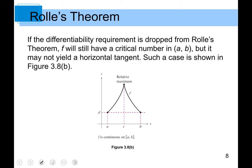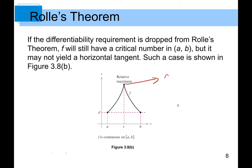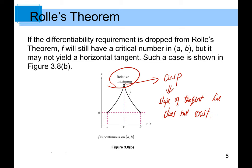If we remove the differentiability requirement from Rolle's Theorem, then f will still have a critical number in the open interval (a, b), but it may not yield a horizontal tangent. This is the case when we have a cusp. A cusp is a typical case where the slope of the tangent line does not exist at that point, yet we still have a relative maximum — even though it's not a horizontal tangent.